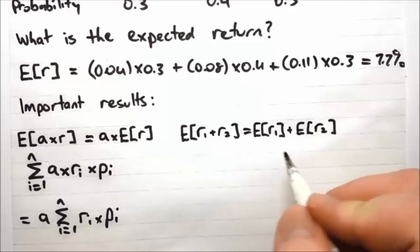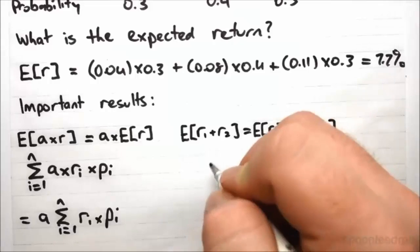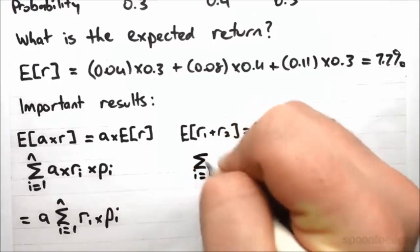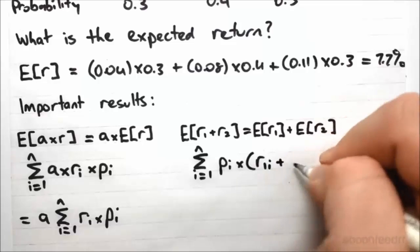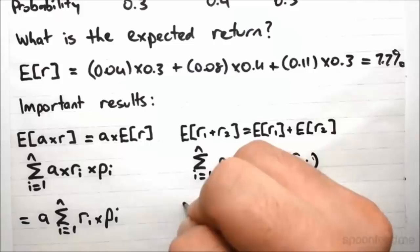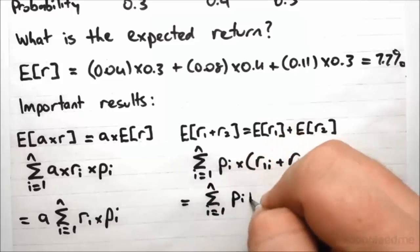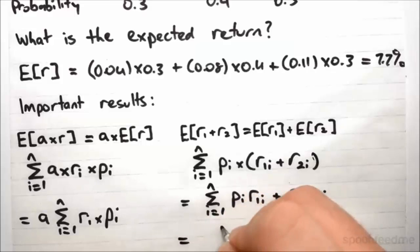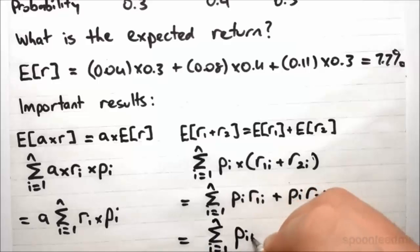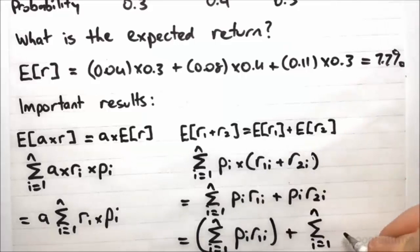We've also got this other result here. If you take the expected value of a sum of variables, then it's just the sum of the expected values of each individual variable. So again, just express this as the weighted sum, Pi times R1i plus R2i, which equals the expected value of the sum, Pi R1i plus Pi R2i, and then this in turn is just that plus that. So you can see that that works out as well.